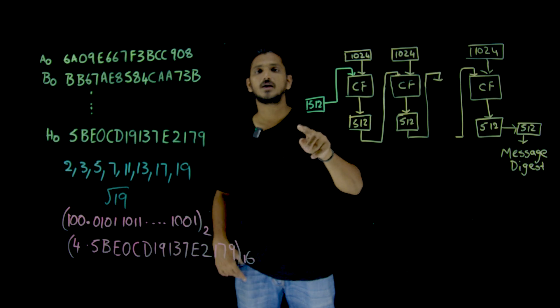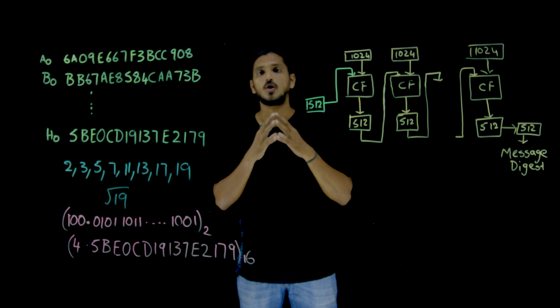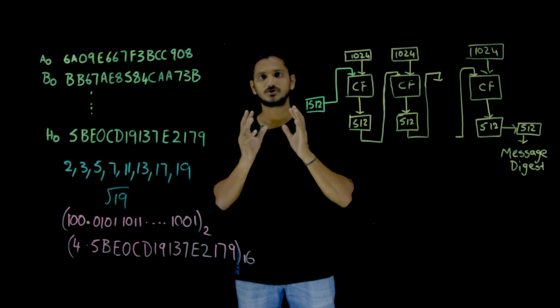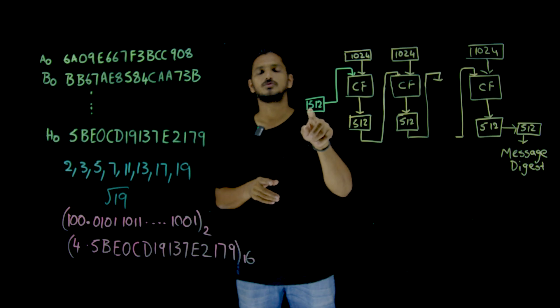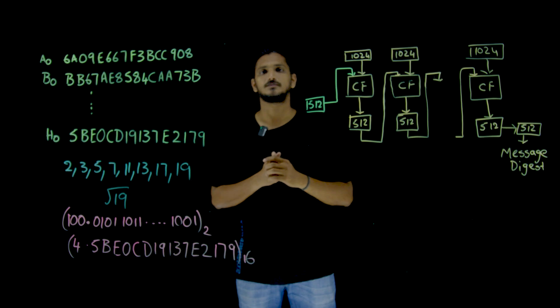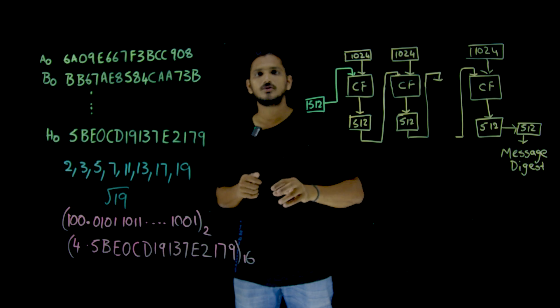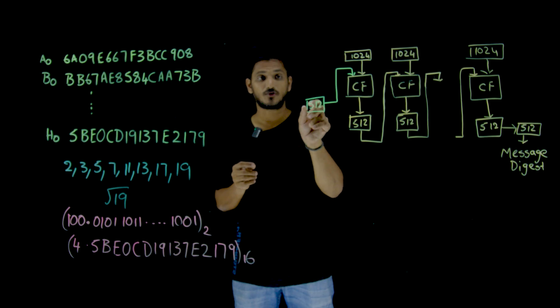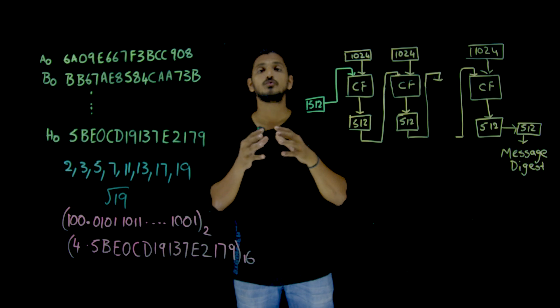The first 512 bits are considering some constant values. Everyone is going to take the same 512 bits in the first 512 initial values. What are those values? That we are going to understand in this class. So the first 512 values are, in our last class we discussed that this 512 bits are divided into words.